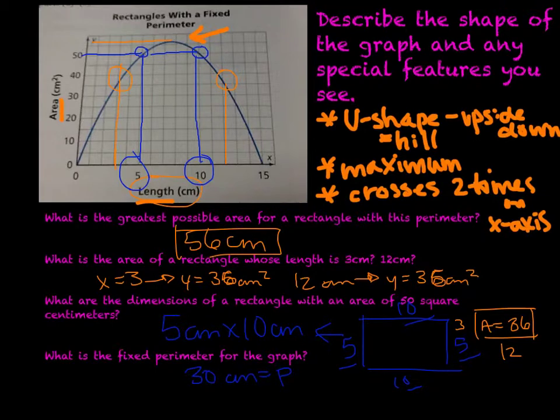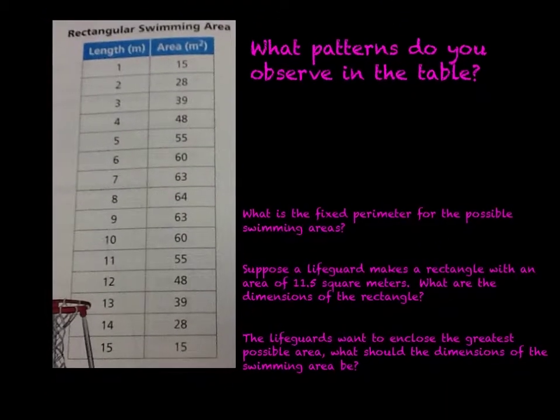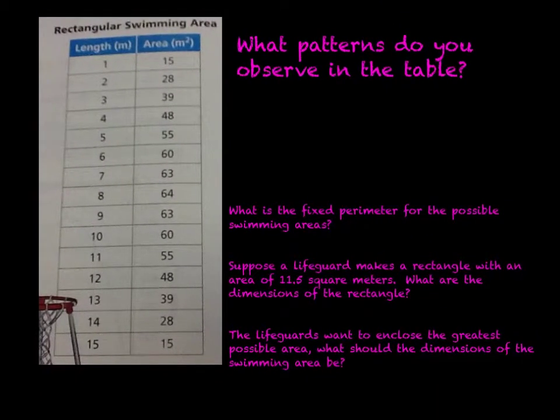Now let's move on and look at a table. A rectangular swimming area. What patterns do we observe in this table? Here we have 1 through 15, a constant increase of 1 on the length. And our area goes 15, 28, 39, 48, 55, 60, 63, 64, 63. So here is my maximum.